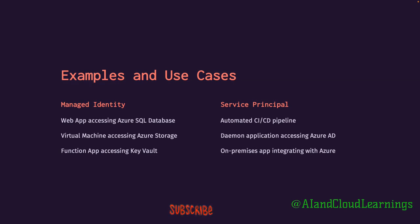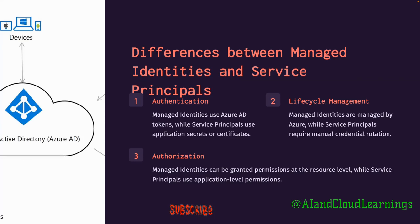To summarize the key difference: managed identity is for enabling communication or authentication between one resource and another resource within the Azure platform. Service principal is a type of credential used to authenticate for deployment — when you're trying to deploy any resource, it gets authenticated through a service principal, just like a service account. Managed identities use Azure AD tokens, while service principals use application secrets or certificates.